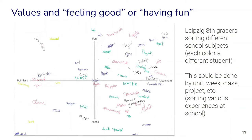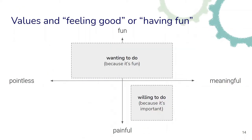Here's an example of 8th grade students sorting different school subjects, where each color was used by a different student. These activities can also be done in a more fine-grained way — by unit, for the week, a certain class, or a project — where students sort various school experiences and then reflect on why something was meaningful or painful. One way to distinguish: when something is fun we talk about wanting to do it simply because it's fun, versus when it's meaningful we say we are willing to do it because it's important, but not necessarily fun.